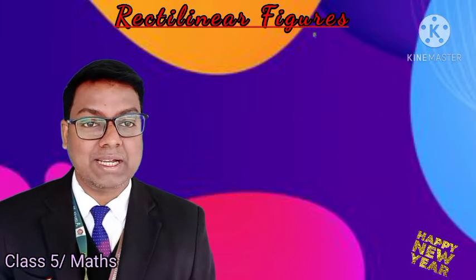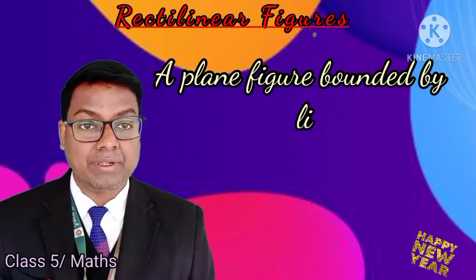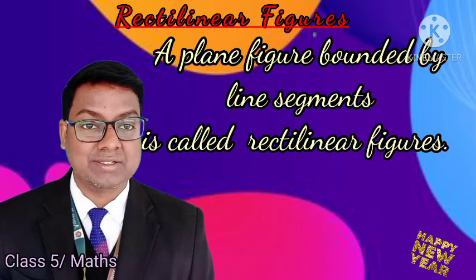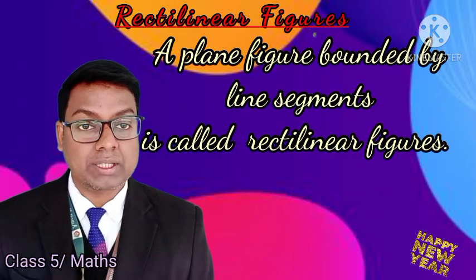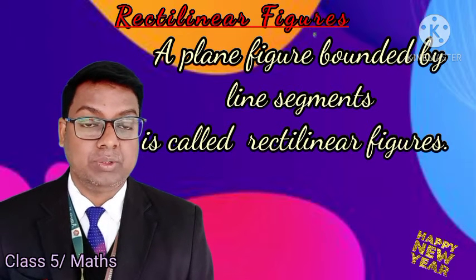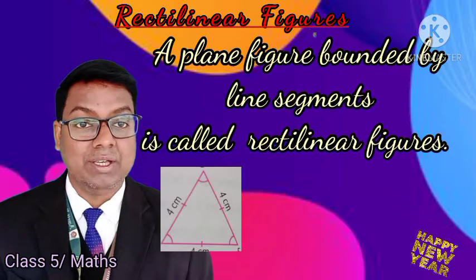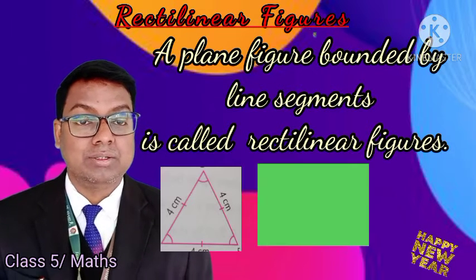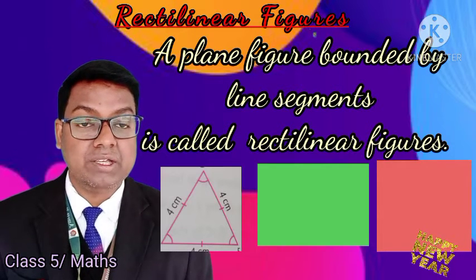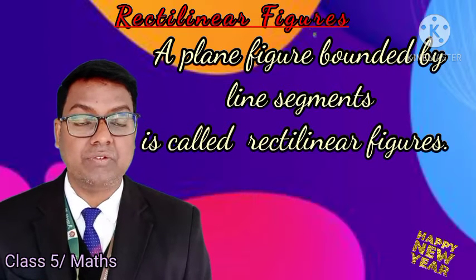What is a rectilinear figure? A rectilinear figure is a plane figure bounded by line segments. For example, triangle, rectangle, square, and polygons are all rectilinear figures. Circle is not a rectilinear figure.